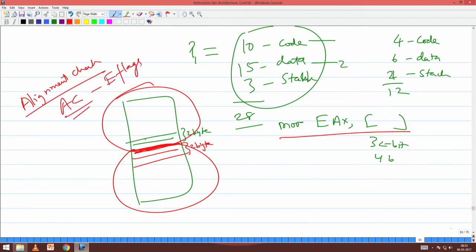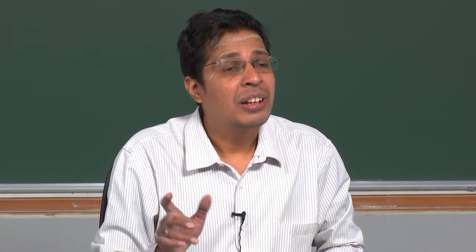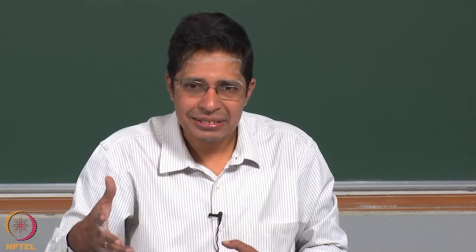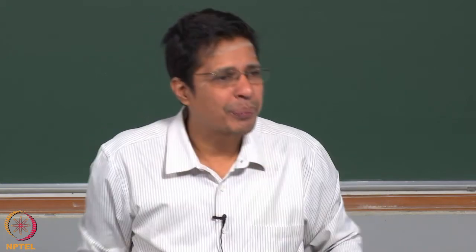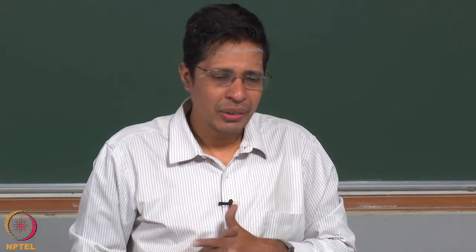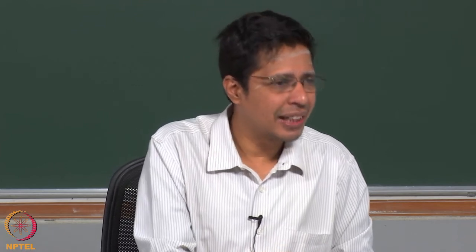If you look at your E-flags register, there is something called the alignment check flag. Alignment check essentially says that you have to align all your 4-byte accesses on 4-byte boundaries. This will not allow you to have a variable starting at a 2-byte boundary - for example, if a 4-byte variable has 2 bytes here and 2 bytes across the boundary (0 to 4095). When you are compiling and executing for the first time, you set this alignment check flag to detect where such violations are happening. You then insert dummy bytes to ensure everything is properly aligned. If they are aligned, this type of issue will not occur.